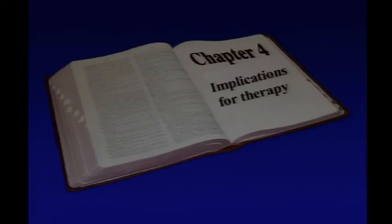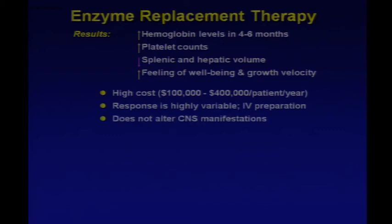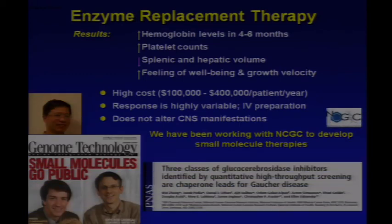Turning to therapeutic implications: therapy for Gaucher disease includes enzyme replacement, which has been very successful in improving quality of life in type 1 — improving hemoglobin, platelets, and shrinking spleen and liver size. However, it's incredibly costly — ranging from $100,000 to $300,000-$400,000 per year per patient. It's a treatment, not a cure, requiring ongoing infusions, the response is highly variable, it's an IV preparation and inconvenient, and importantly it doesn't cross the blood-brain barrier, so it doesn't help any of the neurologic manifestations.